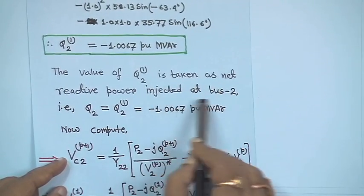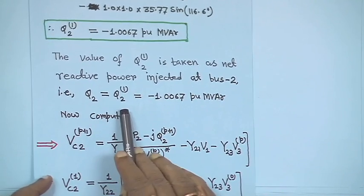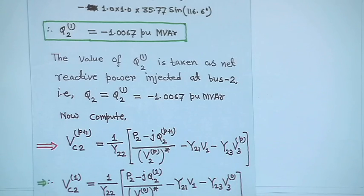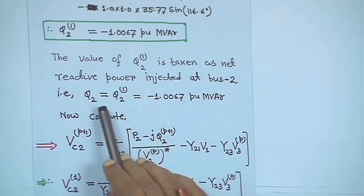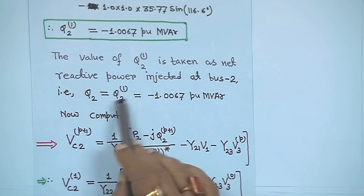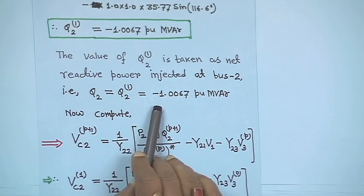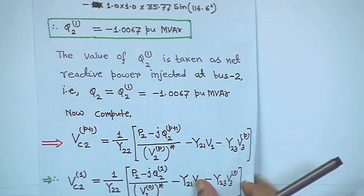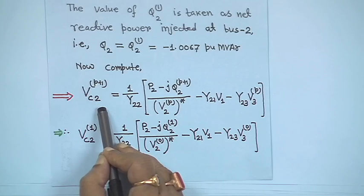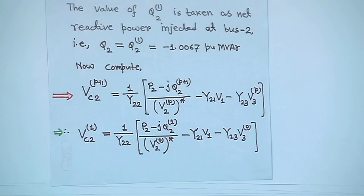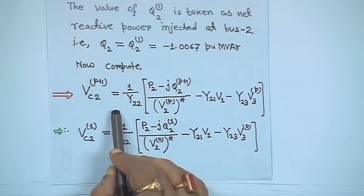The value Q₂¹ is taken as the net reactive power injected at bus 2: Q₂ = Q₂¹ = minus 1.0067. For the PV bus, we first compute the reactive power injection iteratively. Once done, we write V_C2^(p+1) — this is not the correct value yet because bus 2 is a PV bus with fixed magnitude of 1, and using this equation the magnitude will never equal 1.